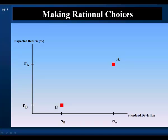We have two securities, A and B. They have different expected returns and different standard deviations. If we want higher return we can choose A, but we incur higher risk. Or if we want lower risk we can choose B, but we would have a lower expected return. Or we can increase our options by forming a portfolio, putting some of our wealth in A and some in B. The expected return of a portfolio is a weighted average of the expected returns of the securities making up the portfolio, where the weights are the proportion of the portfolio invested in each security.